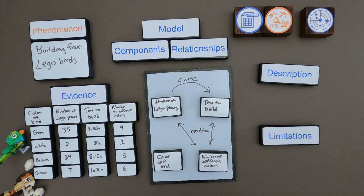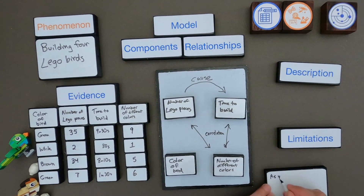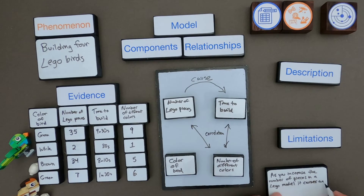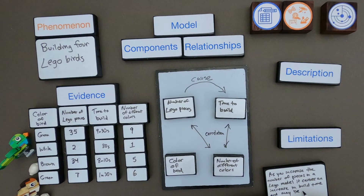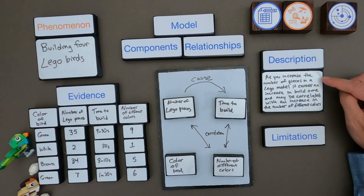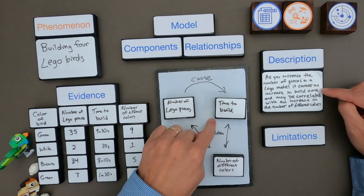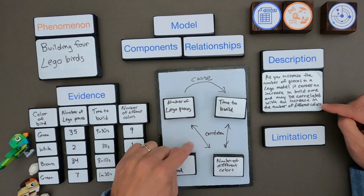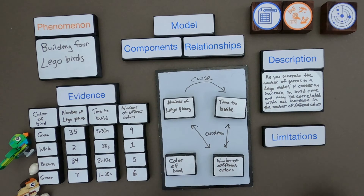I'm missing a description and limitation. For the description: as you increase the number of pieces in a LEGO model, it causes an increase in the time to build, and it also may be correlated with an increase in the number of different colors. That's a description of my model — those are the big three parts of a model. Now I also have to think about limitations — what are some limitations of the model that don't fully explain the evidence and the phenomena itself?